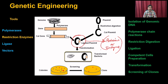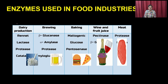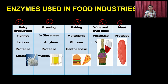Recombinant DNA technology produces recombinant clones used to produce different types of proteins and enzymes, which are useful in different treatment regimes and for industrial outcomes. One such industry is the food industry, where you can use different types of enzymes. The food industry has four major branches: the dairy industry, brewing industry, baking industry, wine industry, and meat industry.